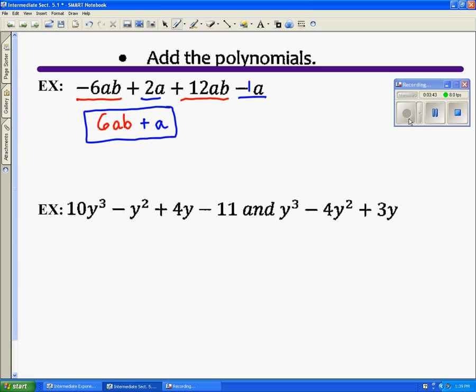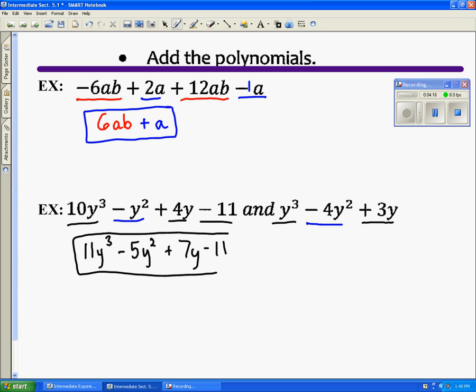In the next example, we have a y³ and a y³, so ten plus a known one is eleven y³. Then we have a y² and a y², so I say negative one and a negative four is a negative five y². A 4y plus 3y is 7y, and then we have minus eleven. There's no other like terms to add, so that's simplified.